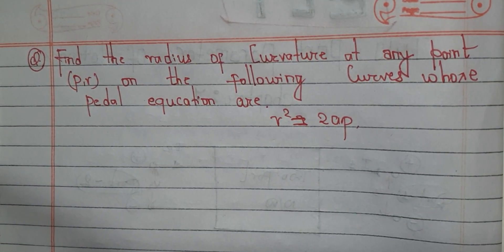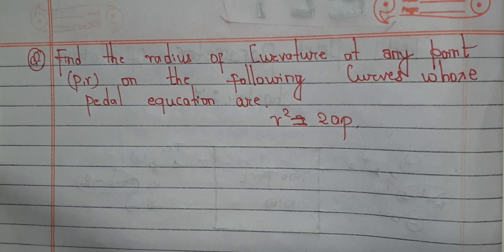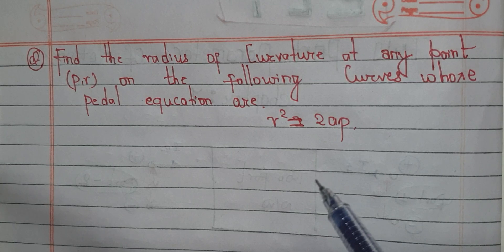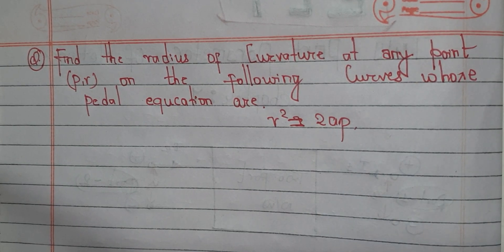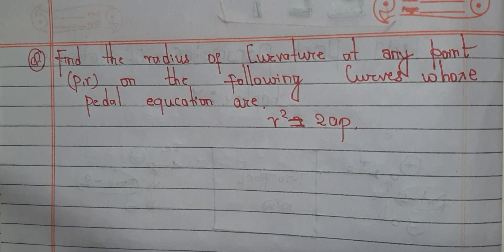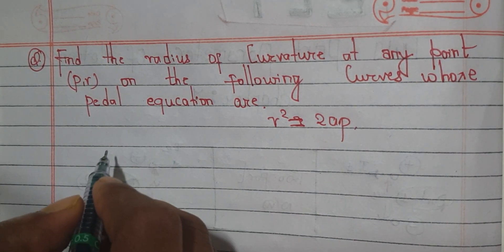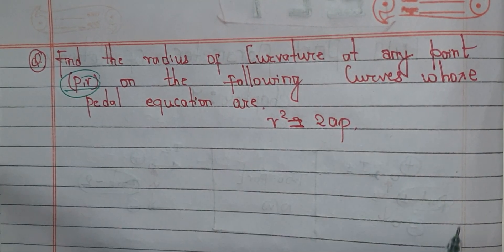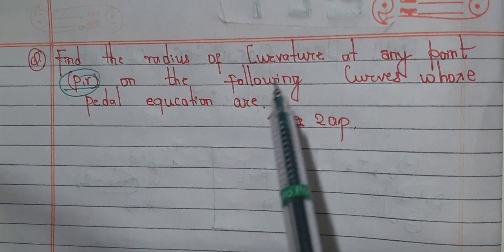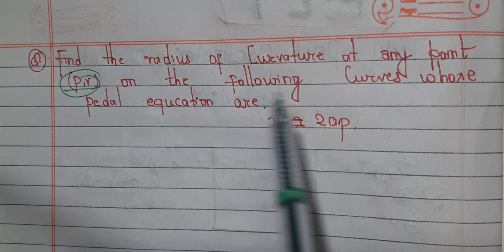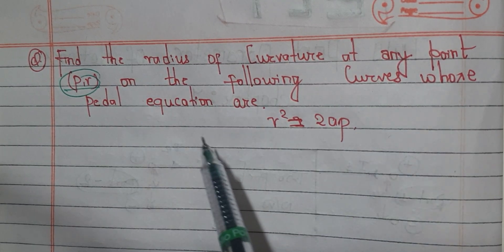Welcome back to the engineering lectures. We continue with the radius of curvature — the difference between xy, origin, and r — and find the radius of curvature at a point P on the following curve.